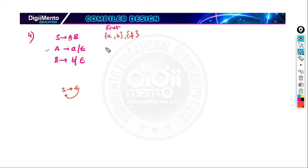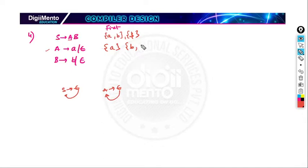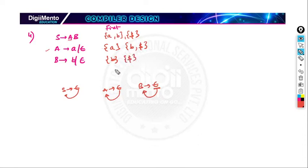For these productions, FIRST of A is small a, and since A generates epsilon, FOLLOW of A is FIRST of B which is small b. If B is also epsilon, then FOLLOW of A is FOLLOW of S which is dollar. FIRST of B is small b, and since B generates epsilon, FOLLOW of B is FOLLOW of S which is dollar. Comparing the two productions for A: nothing in common. Comparing the two productions for B: nothing in common. No conflicts, so this grammar is LL1 grammar.